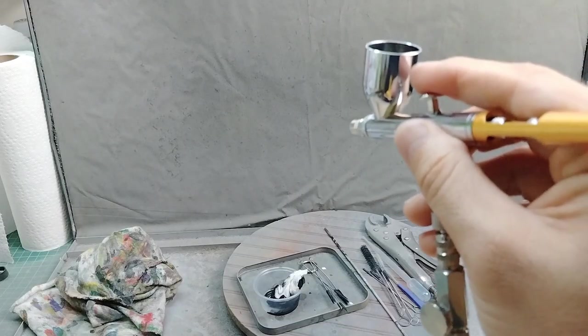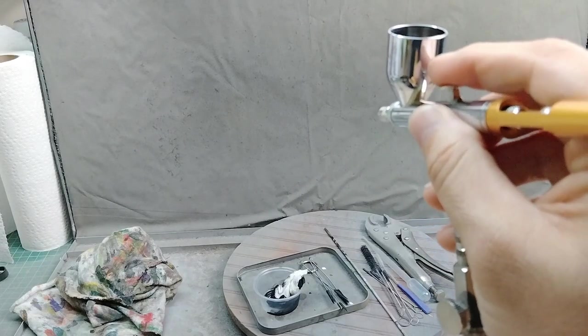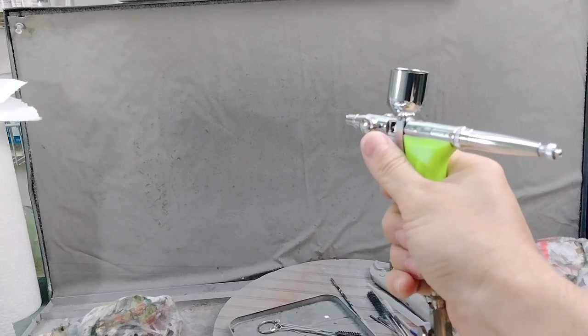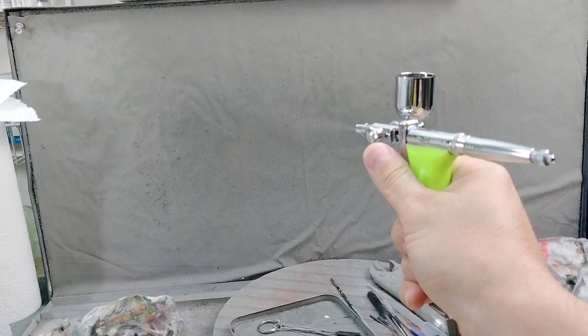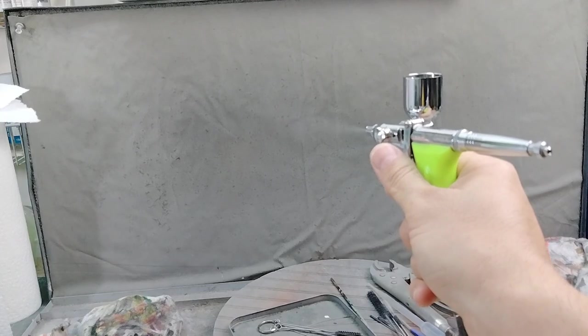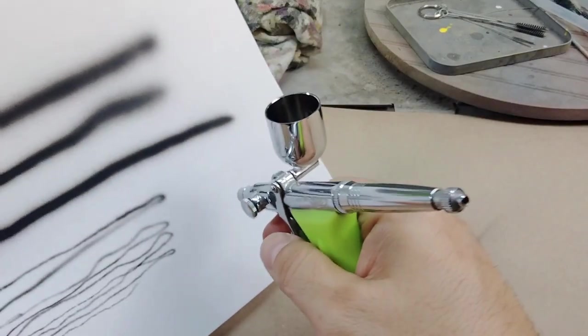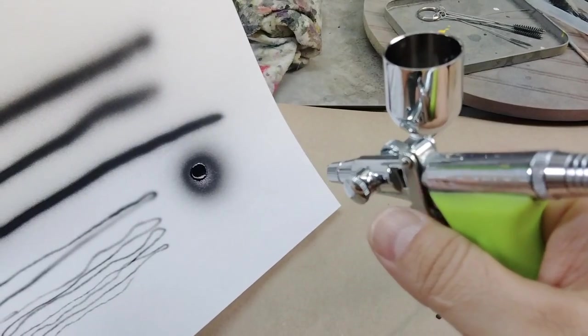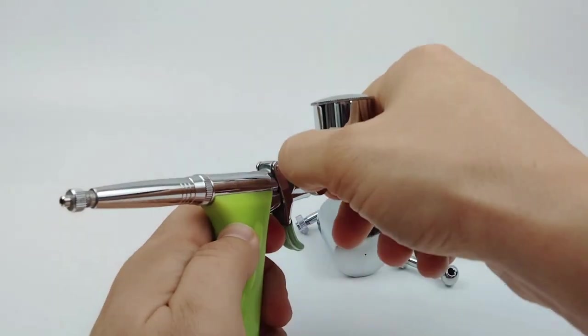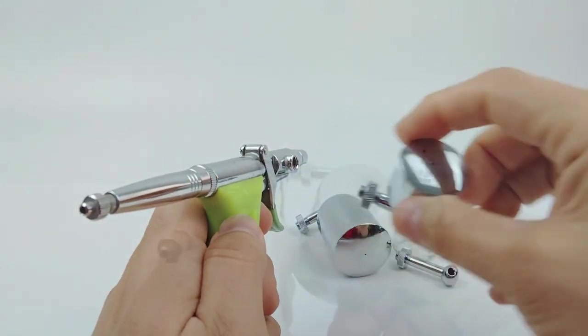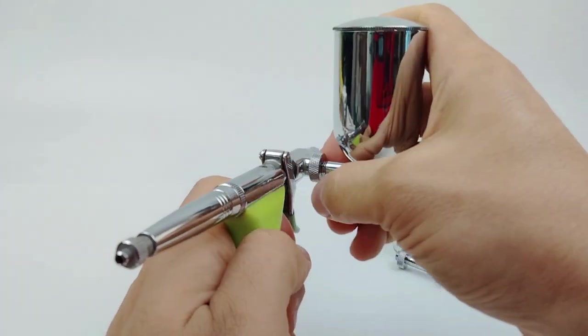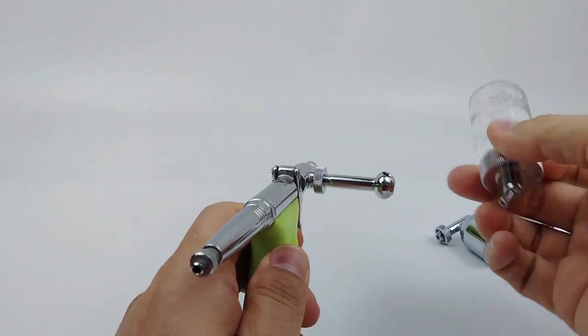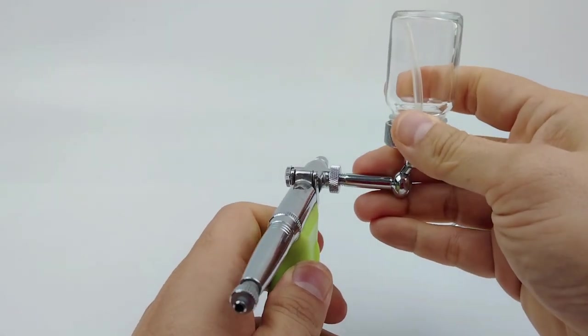But unlike the previous double action trigger where you push down to release the pressure and pull back to open the nozzle, when you pull back on a pistol-style airbrush, the trigger operates both motions at the same time. Having both styles of airbrushes, I find that the pistol grip airbrush has a shorter learning curve and for many can be easier to operate. And just like the siphon feed airbrush, most pistol grip airbrushes have an interchangeable cup with different sizes, so if you're looking to move a lot of paint, you can actually increase the size of the bottle, allowing you to paint for a longer amount of time.